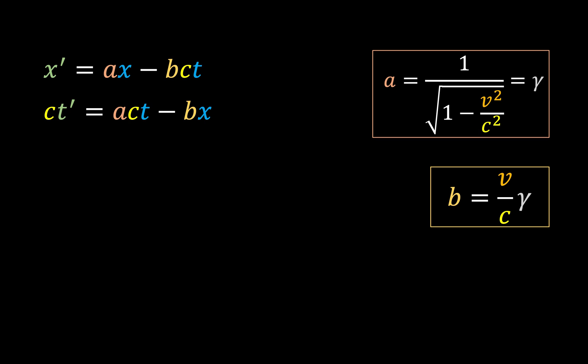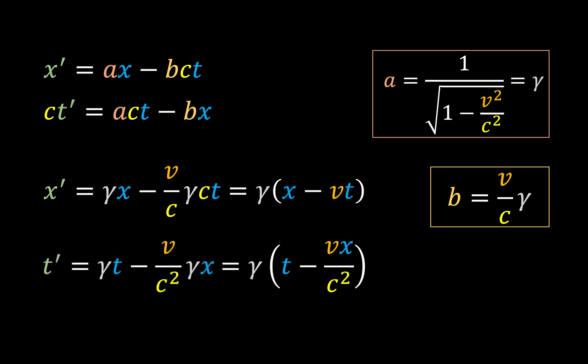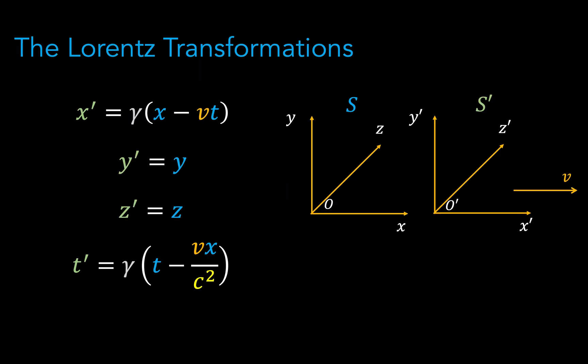All we have to do is substitute these into our expression for x' and also t' to arrive at our transformation equations. So there we have it. Here is our full set of Lorentz transformation equations for the specific case of K' moving along the x-axis. As I promised at the start of the video, we'll take a look at how we can derive the phenomena of time dilation and length contraction just from these transformations.